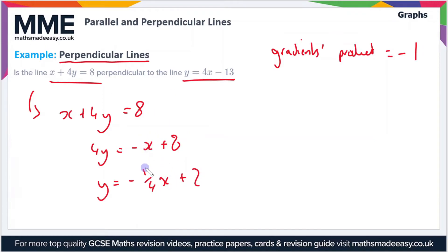So we now have this in the form y equals mx plus c. As you can see, the gradient is minus a quarter, and here the gradient is 4. So if we multiply these together, we get 4 times minus a quarter, so that equals minus four over four, which cancels to minus one. So yes, the gradients product is minus one.